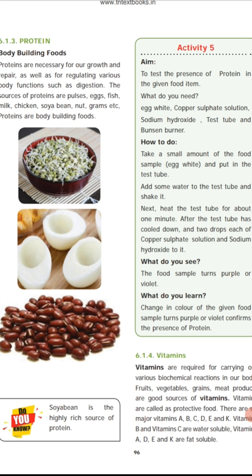Next nutrient is vitamin. Vitamins carry out biochemical reactions in our body. Fruits, vegetables, grains, and meat are all good sources of vitamins. Vitamins are called protective foods. There are 6 major vitamins: A, B, C, D, E, and K. Vitamins B and C are water-soluble. Vitamins A, D, E, and K are fat-soluble vitamins.